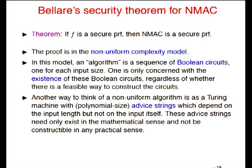However, Bellare's proof is in the non-uniform complexity model — a model where you consider a series of Boolean circuits one for each input size, and are only concerned with the existence of said circuits, not whether they can be efficiently constructed. Equivalently, a non-uniform algorithm is an ordinary Turing machine with a set of advice strings, one for each input size, that only have to exist and may be unconstructible — meaning no one knows how to construct them efficiently.